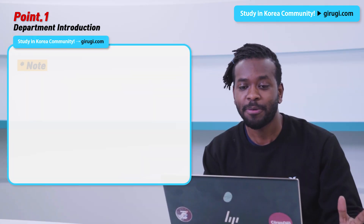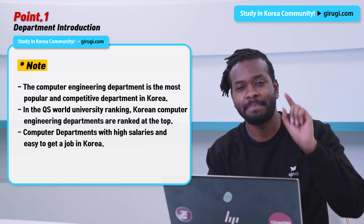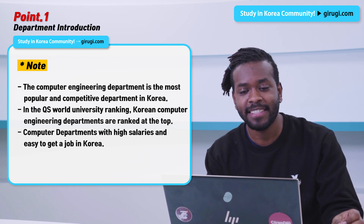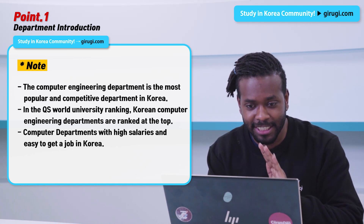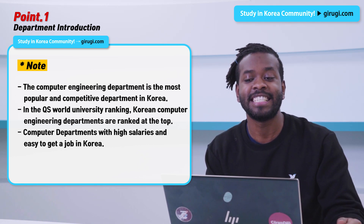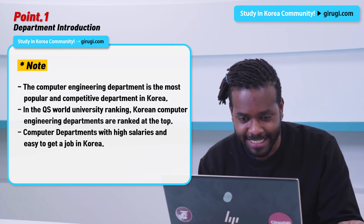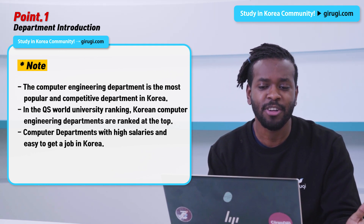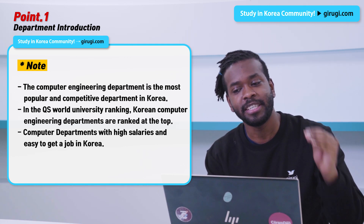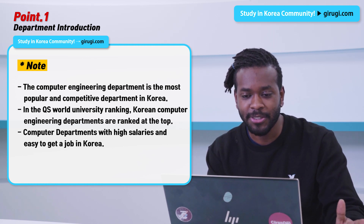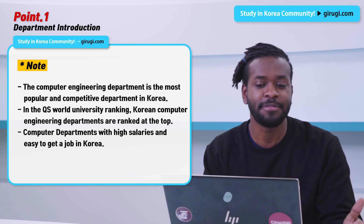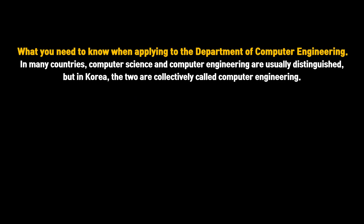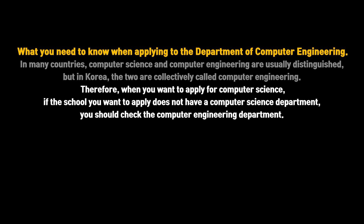The computer engineering department is the most popular and most competitive department here in Korea. QS is one of the recognized university evaluation institutions, and according to QS, Korean computer engineering majors are among the tops on the list — meaning Korea has a good competitive edge overseas as well. Almost all Korean universities have a computer engineering department. It is famous because it's easy to get a job here in Korea. Many countries distinguish between computer science and computer engineering, but in Korea it's called computer engineering and they are not divided.